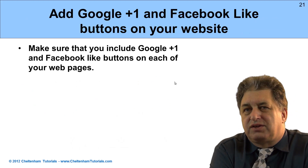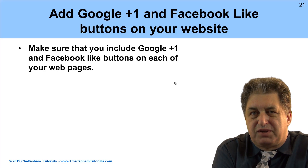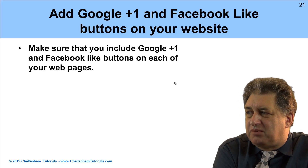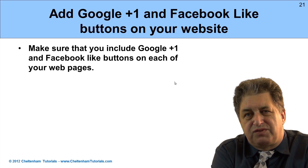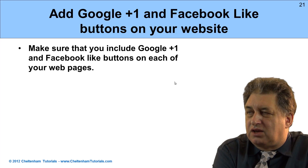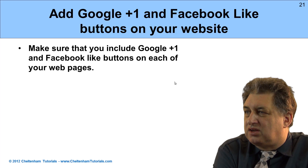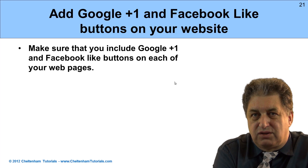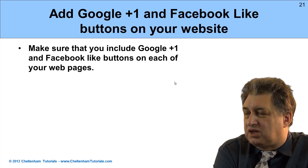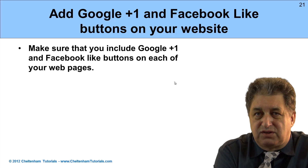Something else you should get into the habit of doing is putting Google Plus One and Facebook Like buttons on your website. This basically makes it easy for people to vote with their feet — if they like you, they can click on the buttons and you get more likes. The more of these you get, the better it's going to be for your website. It's like a voting system, basically.